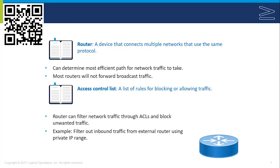Most routers won't forward broadcast traffic from one subnet to another, and they generally have the ability to control the type of traffic. By default, any traffic except broadcast would be allowed to and from an interface, but an access control list can be established on a router interface which can filter traffic — allowing certain traffic and blocking other traffic. We can whitelist or blacklist, filtering inbound traffic from an external router using a private IP range or looking at particular port numbers. For example, a router connected externally can reject traffic on that external interface that has a source IP address that's internal, because that would represent a spoofed packet.